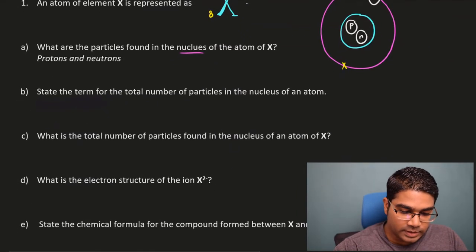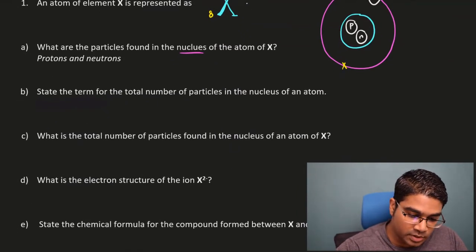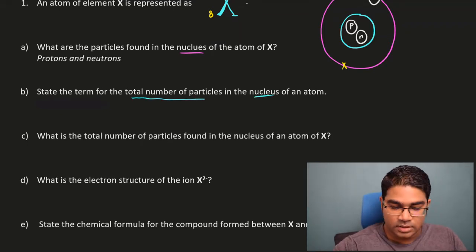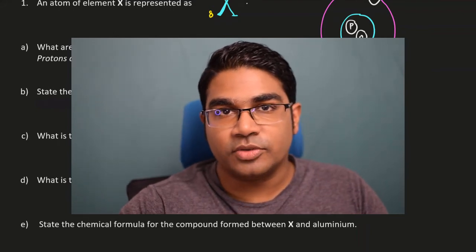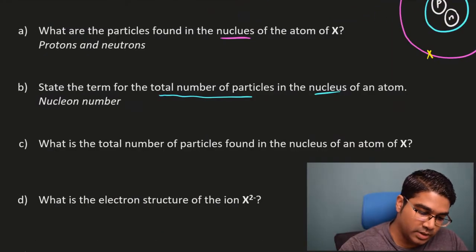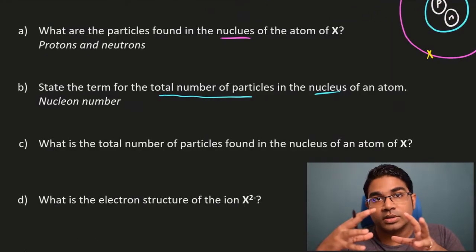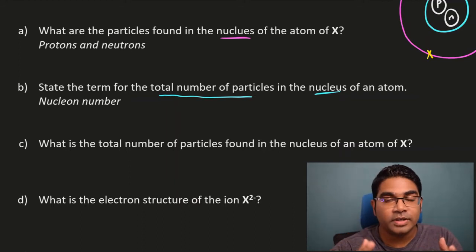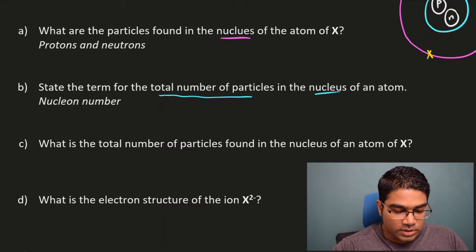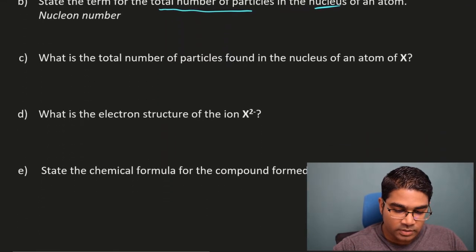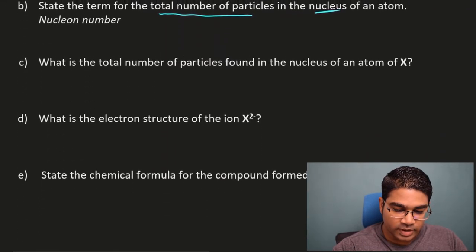For part B: state the term for the total number of particles in the nucleus. We are talking about the total number of protons and neutrons added together. They are known as the nucleon number. In fact, protons and neutrons together are collectively known as nucleons, so this is the nucleon number.